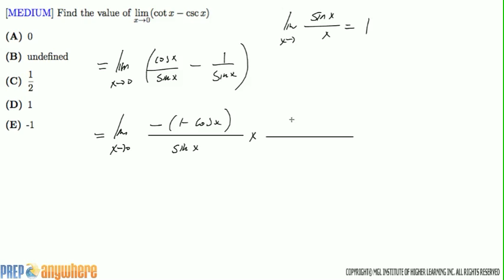Now I'm going to use a conjugate pair: 1 plus cosine of x, 1 plus cosine of x, top and bottom, so that the numerator will become 1 squared minus cosine squared x.